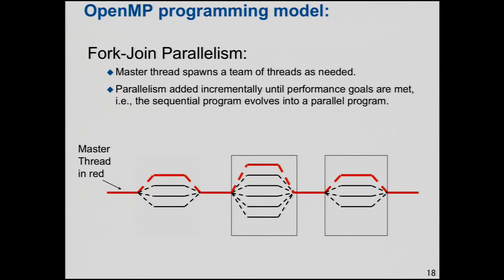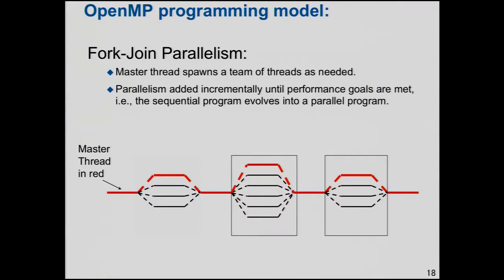OpenMP is based on the fork-join model. The idea is very simple: you have a master thread — the initial thread that starts when you begin your program. It cruises along through the code and comes to some point where extra threads could be useful, then it forks off a team of threads. The master thread will be part of the team with ID equal to zero. That team of threads goes along, works and does stuff in parallel, and then joins back together. The one original thread will continue until later in the program where it sees another point where additional threads could help, and it'll create another team. Notice that team could be a different size.